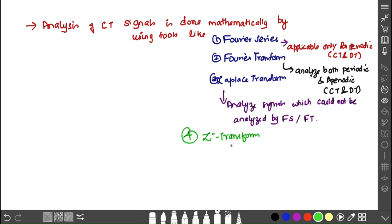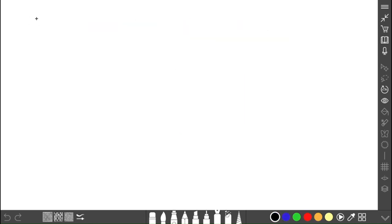Laplace transform is used for cases not applicable to Fourier series or Fourier transform. Z transformation is applicable only for DT signals. The first three are covered in the first three units, and the fourth unit comes with Z transformation.